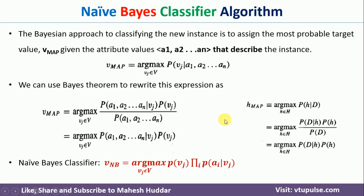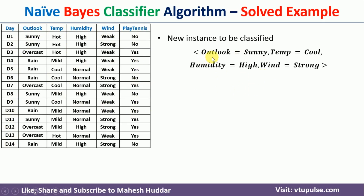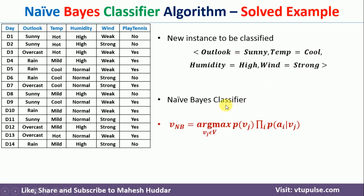Now we will take a very simple example to understand the Naive Bayes classifier equation. The dataset given to us has 14 instances and 4 attributes, and 'Play Tennis' is the target. We want to classify a new example where outlook is sunny, temperature is cool, humidity is high, and wind is strong — either as yes or no. Using the equation, there are two possible hypotheses: yes and no.